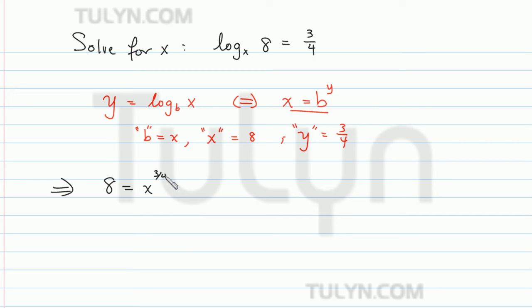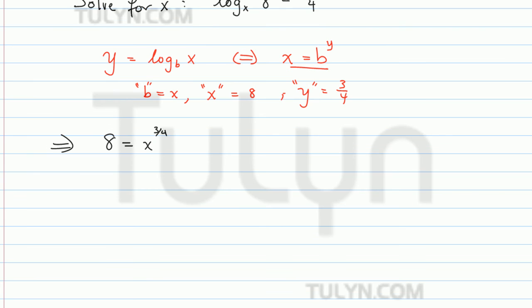So now, we want to solve x to the 3 fourths is equal to 8. In order to get rid of this x, what we can do is take both sides to the 4 thirds power.